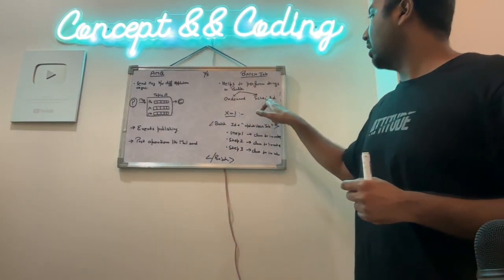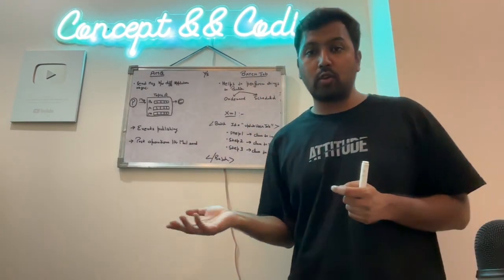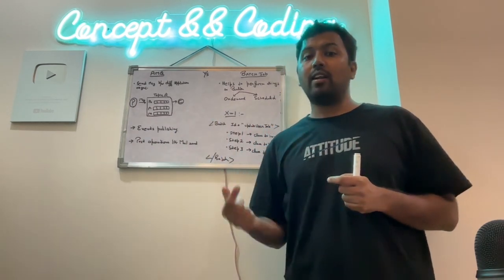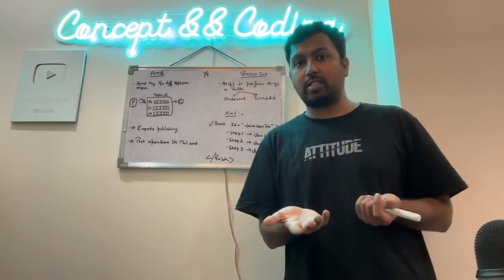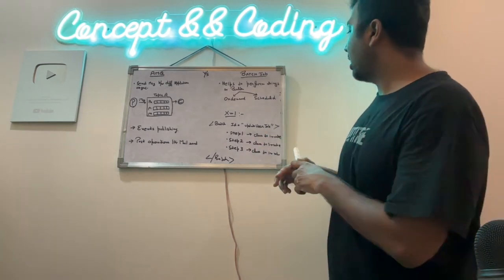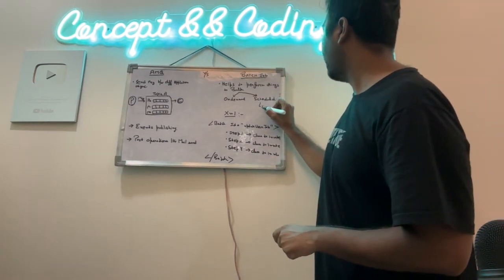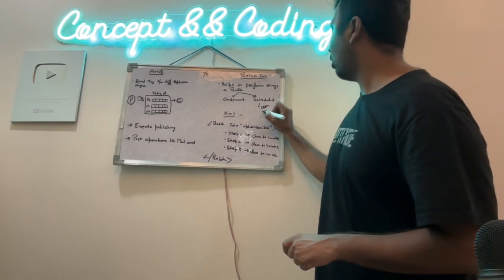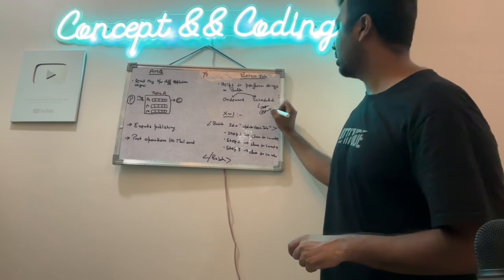Another is scheduled. Scheduled is like running at a specific time or day. Like NEFT, I have given you one example. So scheduled is like generally we have cron jobs. There are something called cron jobs and also at the rate schedule if you are using a spring annotation.